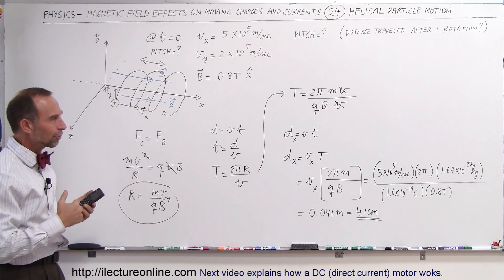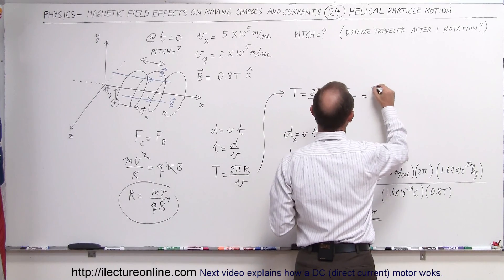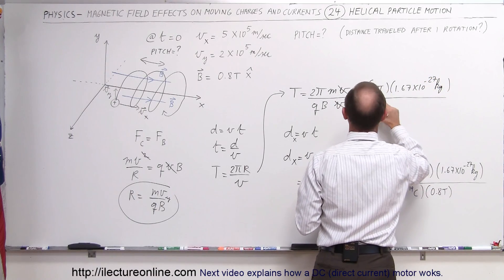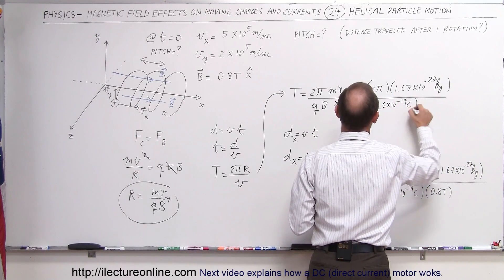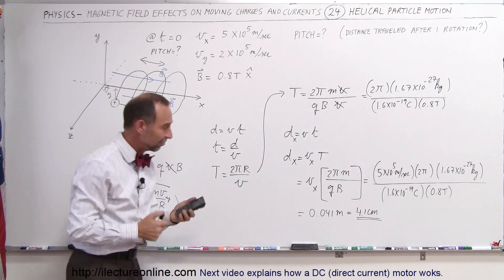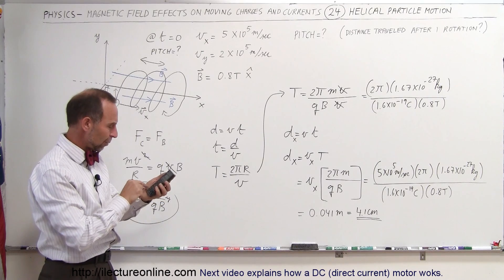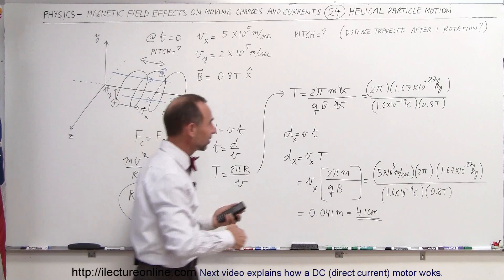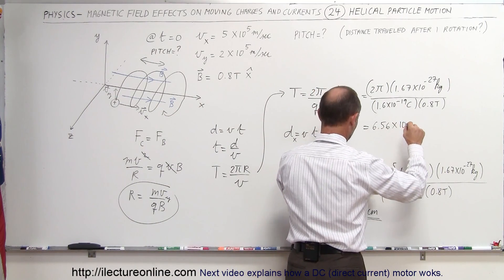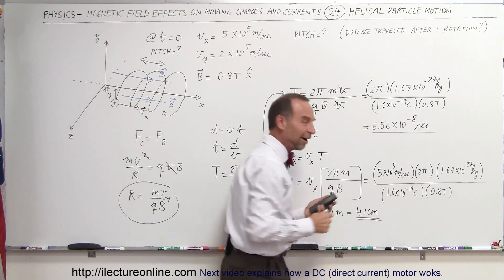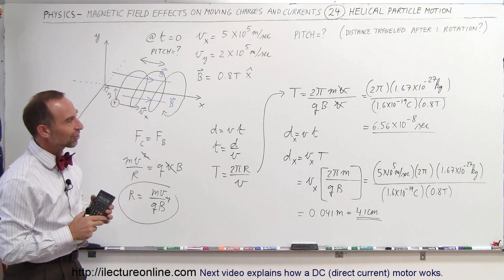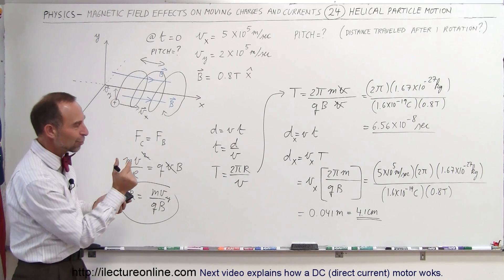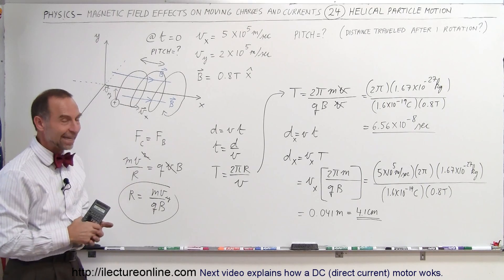Let's also find how long it takes for the proton to make one trip around the circle — probably a very short time. Using T = 2πm/(qB): 2π times 1.67×10⁻²⁷ kg, divided by 1.6×10⁻¹⁹ coulombs and 0.8 teslas. That equals approximately 6.56×10⁻⁸ seconds — about 65 to 66 nanoseconds for one trip around the circle. So every 65–66 nanoseconds, the proton moves 4.1 centimeters in the x direction. That's what we mean by helical particle motion.